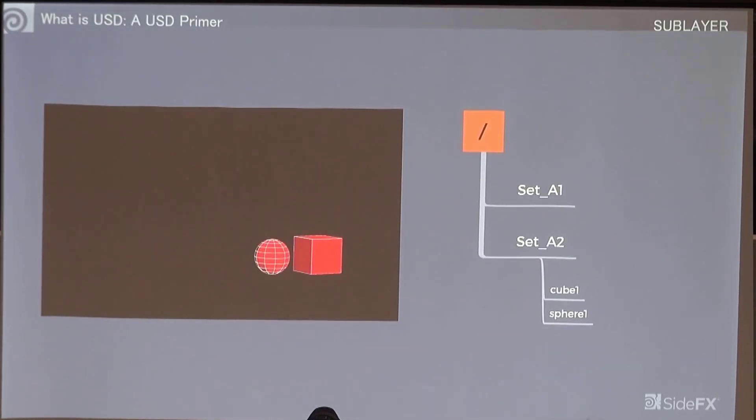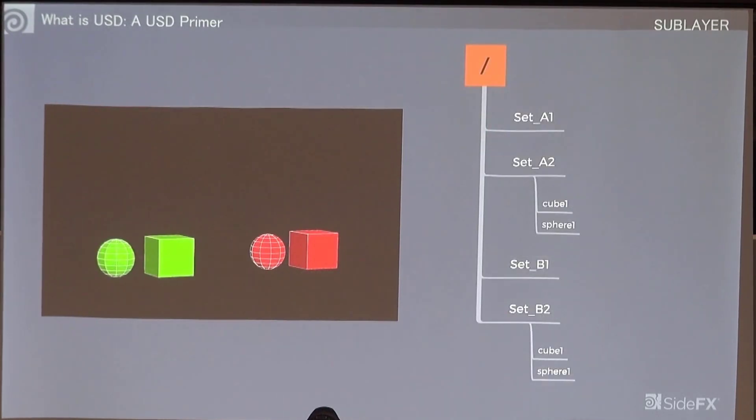We start with an empty scene graph, and then we sublayer in set A USD, and this is what your scene graph looks like. If we sublayer in set B, we get something that looks like this. You can see where set A and set B are contributing to that composed stage.